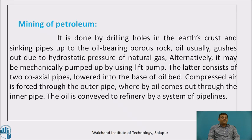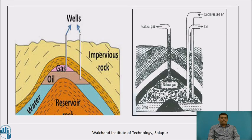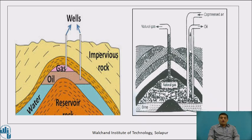So, origin indicates how petroleum forms below the earth's crust, and mining indicates how we bring the crude oil to the surface. This is also explained with the help of a diagram. We can see that the oil is formed below the earth's crust because of pressure, chemical elements, and bacterial action, as organic bodies slowly convert into crude oil. Because of the pressure of natural gases, the oil normally comes out. Otherwise, as shown in the second diagram, we introduce mechanical lifting pumps to bring the oil to the surface.